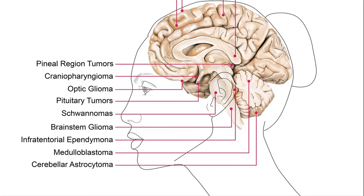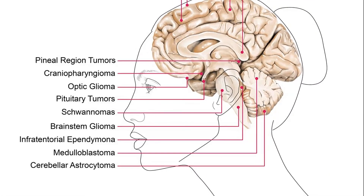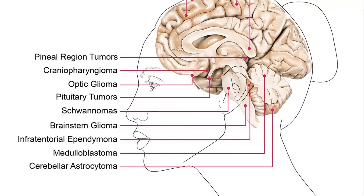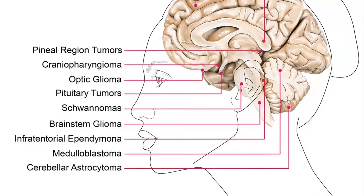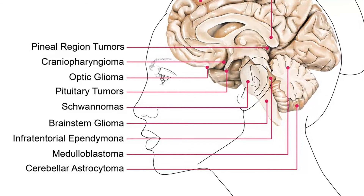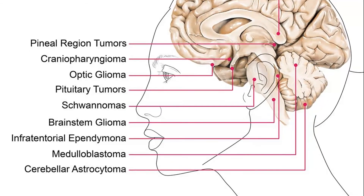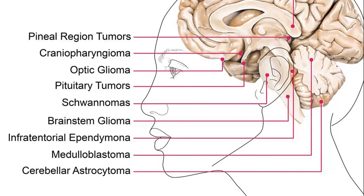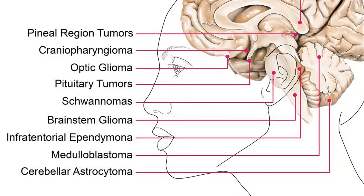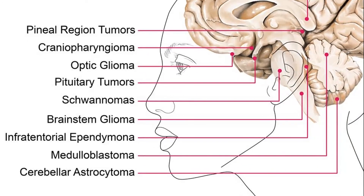Moving on to infratentorial, you have the pineal region tumours from the pineal gland, craniopharyngiomas, optic glioma, pituitary tumours, schwannomas, brainstem glioma, infratentorial ependymoma, medulloblastoma, and cerebellar astrocytoma.